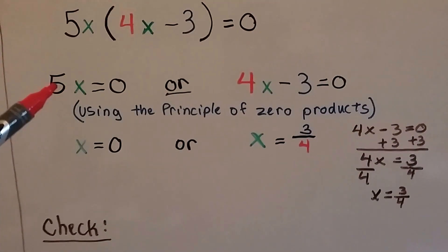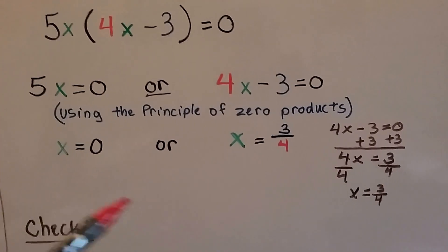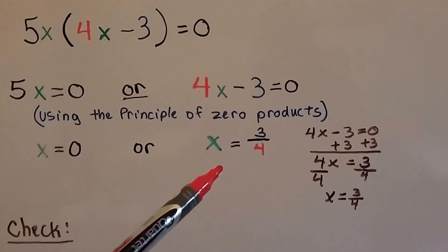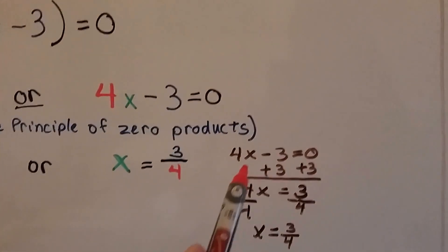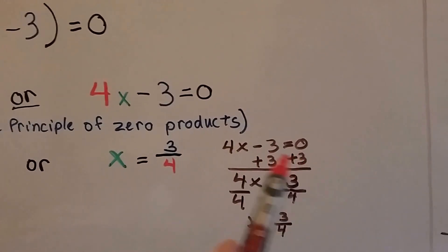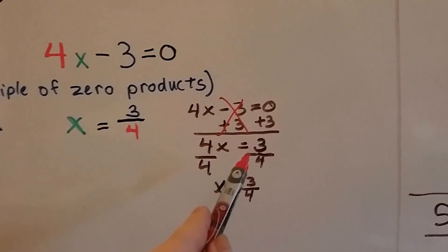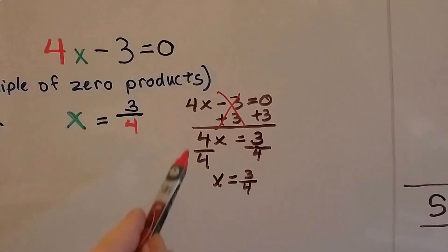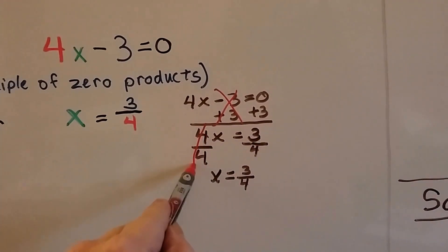This is self-explanatory. If 5x equals zero, then x must be zero itself. And then on this side, the 4x minus 3 equals zero. What we do is, because this is a minus 3, we add 3 to each side to eliminate this as a zero pair. Now we've got 4x equals 3. We divide both sides by the coefficient 4.